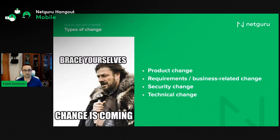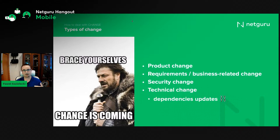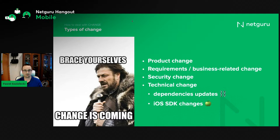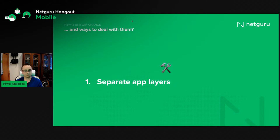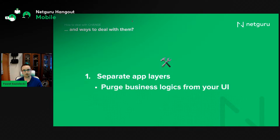Then we have technical changes, which in most cases result from changes in our dependencies that we want to update, and of course changes in the SDK or compiler we want to use. So is there a way we can actually deal with change — implement the desired change without having to rebuild half the application?